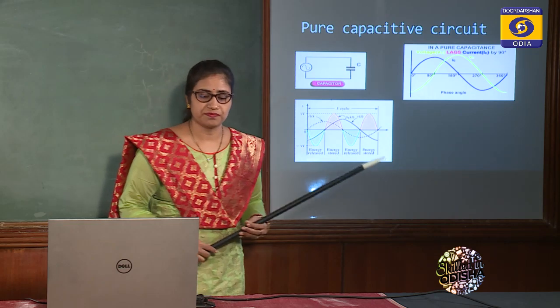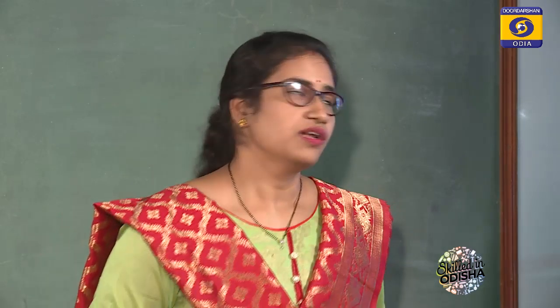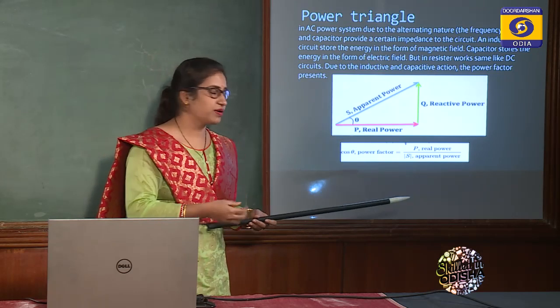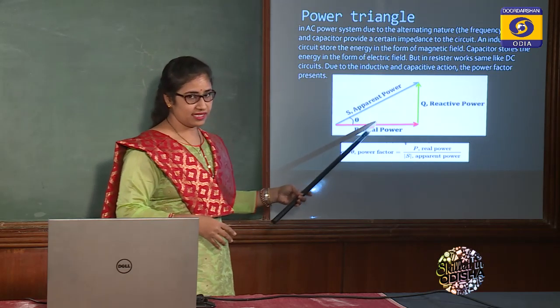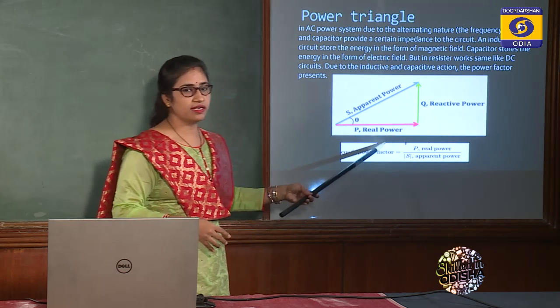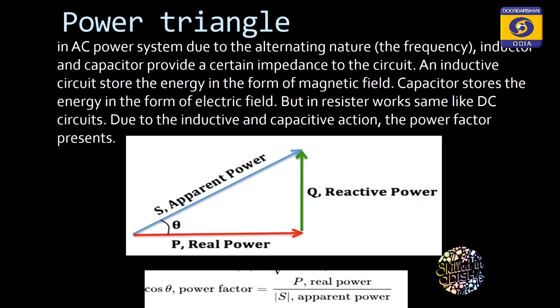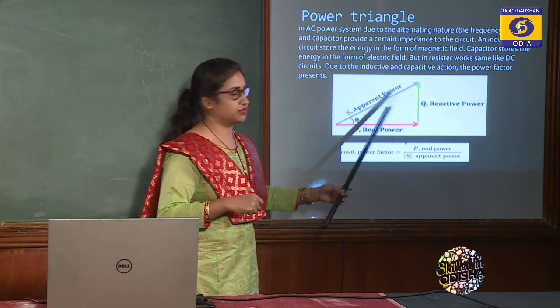By summing up all the powers drawn by resistors, inductors, and capacitors — which are the loads of our AC power systems — we can form a triangle, which is the power triangle. In a power triangle, which is a right-angle triangle, the base represents real power, the perpendicular represents reactive power, and the hypotenuse represents apparent power — the total power — which is S = √(P² + Q²).